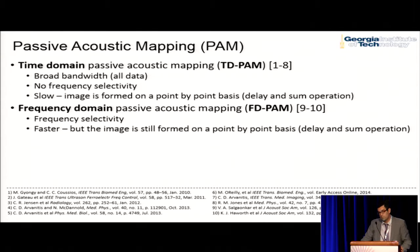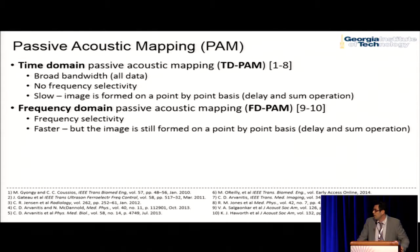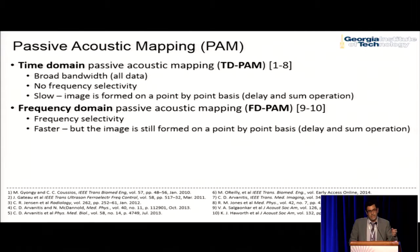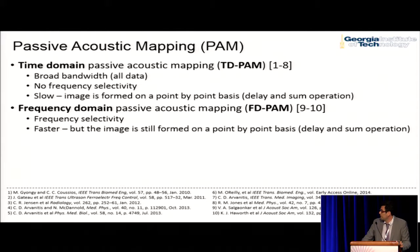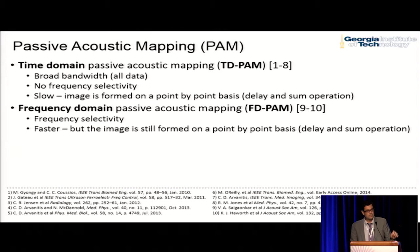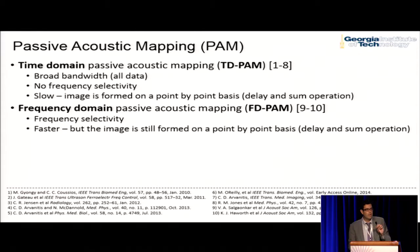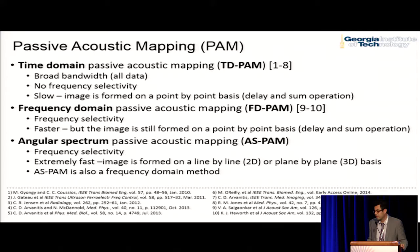This time domain method was proposed by the University of Oxford. The other method uses frequency domain approaches and has frequency selectivity. But again, because the image is formed on a point-by-point basis, it cannot go faster.